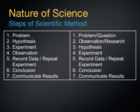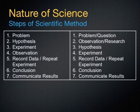Here are two different orders of the scientific method. On the left we have: problem, hypothesis, experiment, observation, record, repeat experiment, conclusions, and communicate results. This is the one I tend to use. I use the acronym PHEORC — P-H-E-O-R-C-C — which stands for problem, hypothesis, experiment, observation, record, repeat, conclusion, and communicate results.